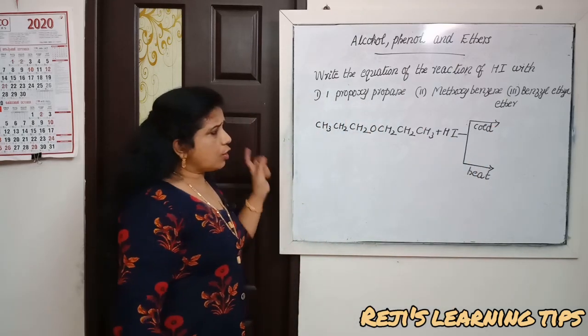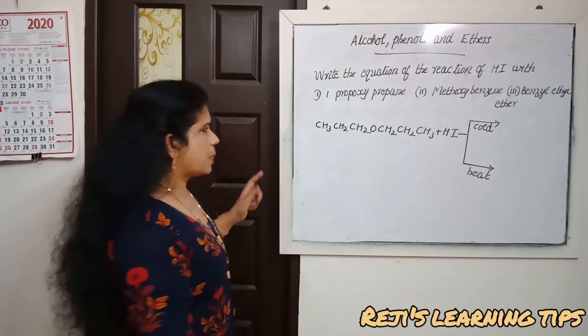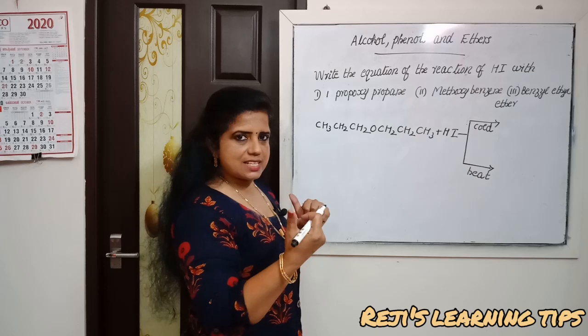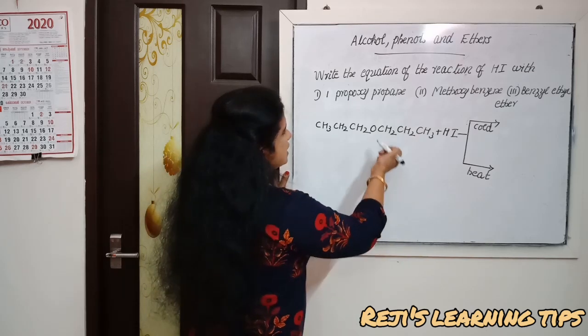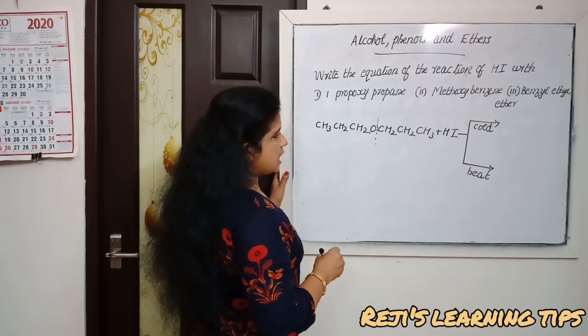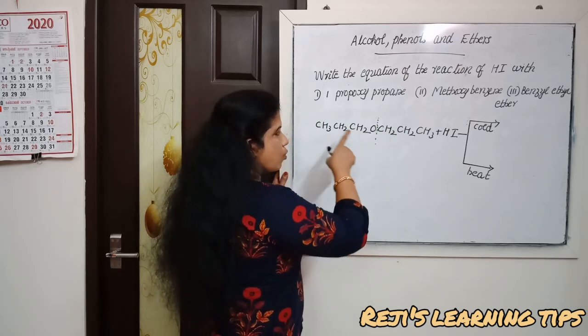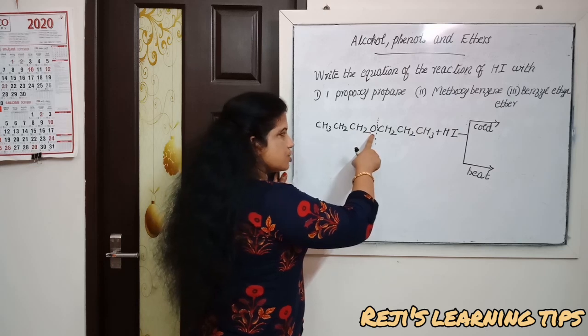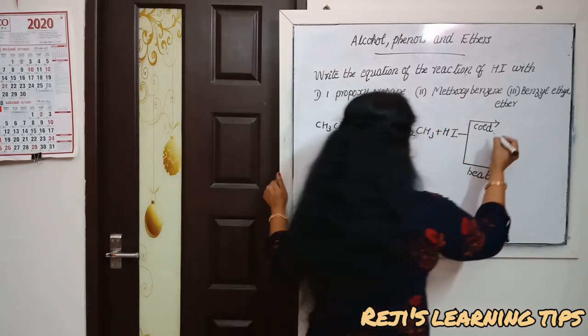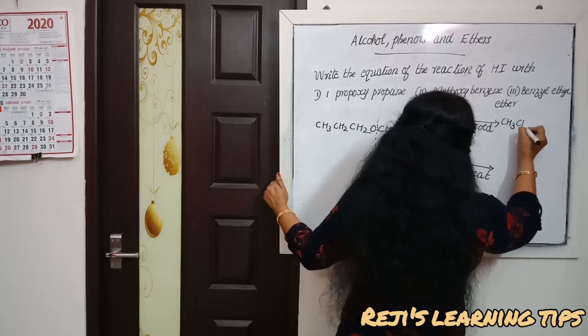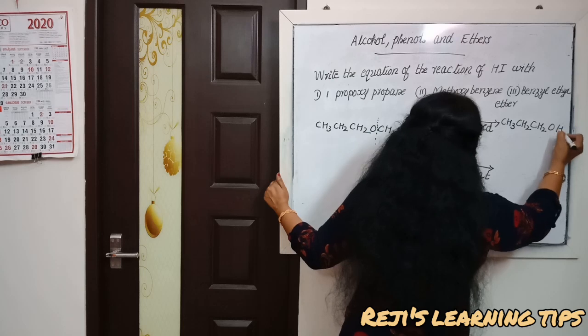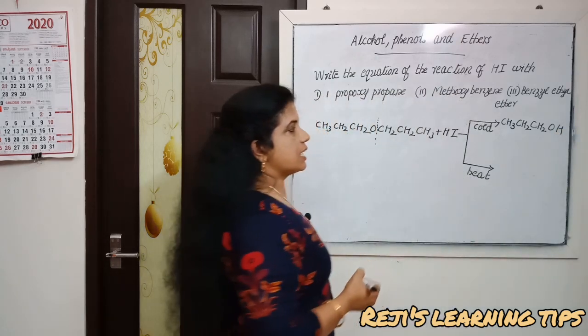In cold condition, this is a symmetrical ether. It undergoes splitting like this: CH3-CH2-CH2-O reacts with H, and we will get the alcohol CH3-CH2-CH2-OH.